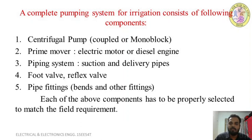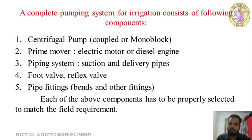A complete pumping system for irrigation consists of the following components: first, a centrifugal pump, which may be coupled or a monoblock pump set. Next, a prime mover — either an electric motor (induction motor) or a diesel engine — to run the pump. Then a piping system: a suction pipe that draws water from the lower level, and a delivery pipe that delivers it to the required location. Foot valves and reflux valves are used to control water flow, and pipe fittings like bends and accessories are also used.